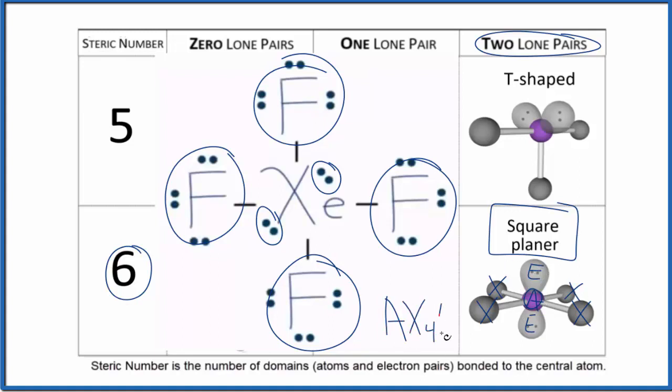And then E, we have two of those. AX4E2, and if you look this up, it's going to be square planar.